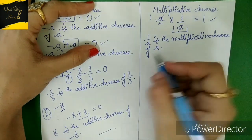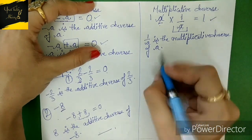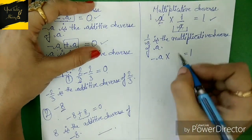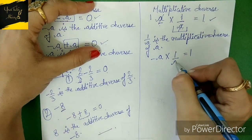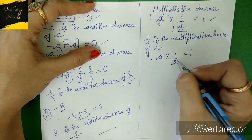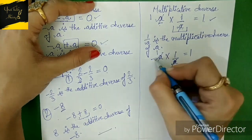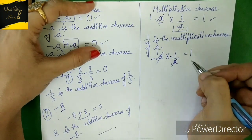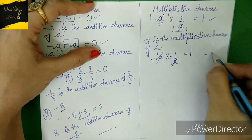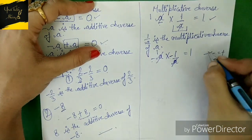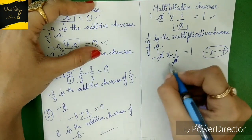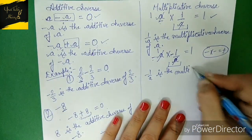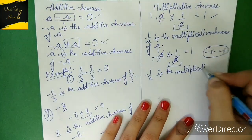In a similar manner, suppose I have '-a'. What should be multiplied to this to get a result of one? We divide to get '1/a', but minus times one gives minus one — we need plus one. So we need to add an extra minus sign: '-1/a'. Since minus multiplied by minus gives a positive result, we get plus one. So '-1/a' is the multiplicative inverse of '-a'.